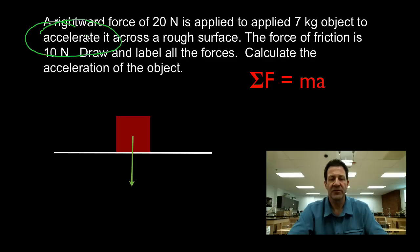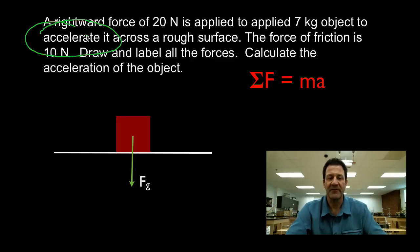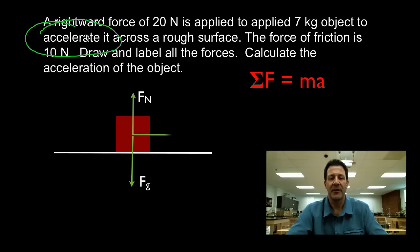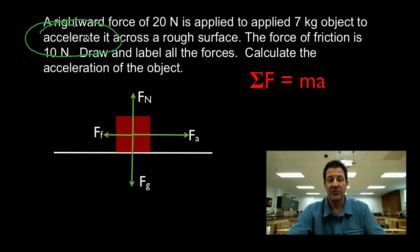The first force is the force due to gravity that points downwards towards the center of the earth. The object is sitting on a surface — it's not falling through that surface, so the surface provides an equal and opposite force. We call that the normal force. Then we have the applied force, which is 20 Newtons. It is a rough surface, so the friction force is opposite the applied force.